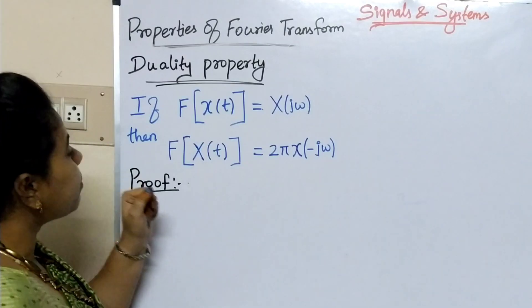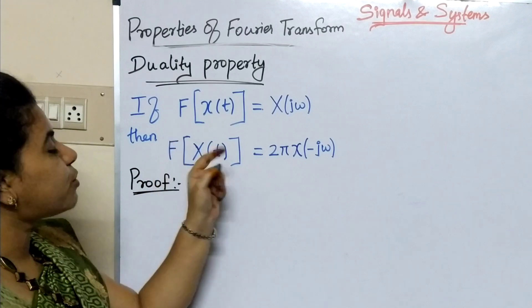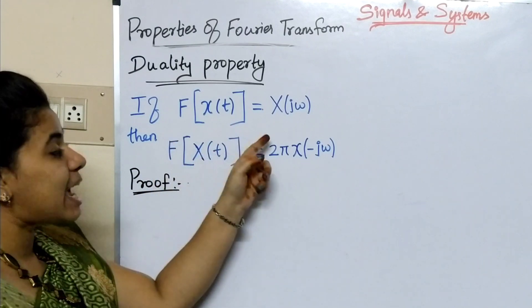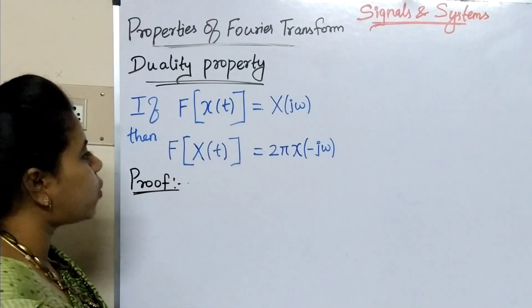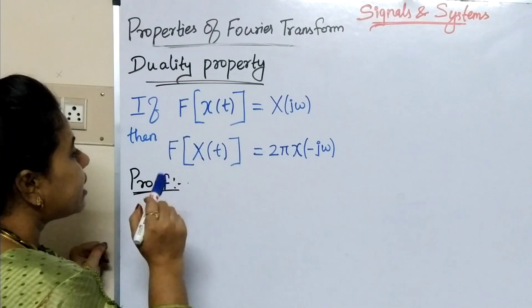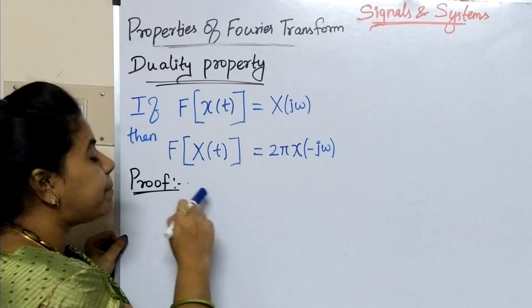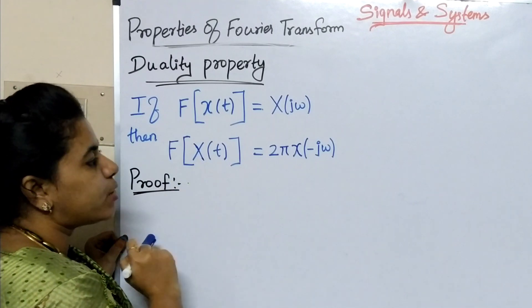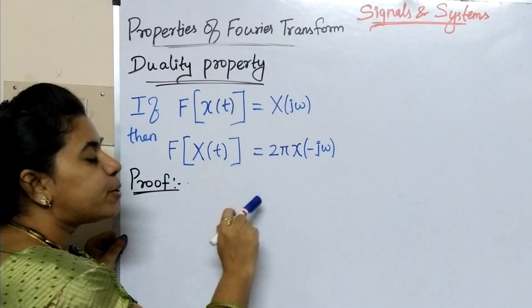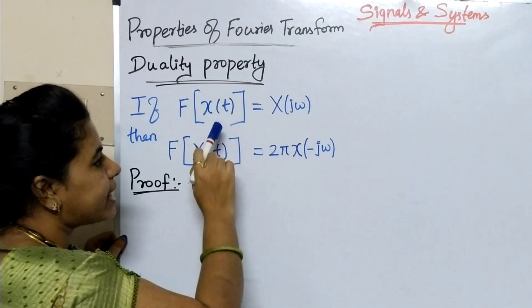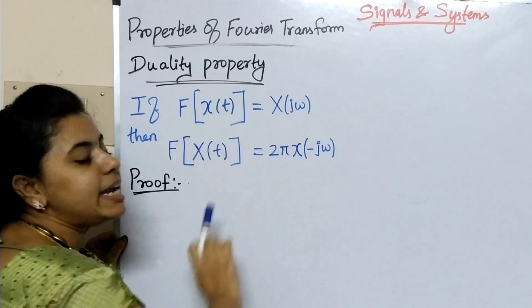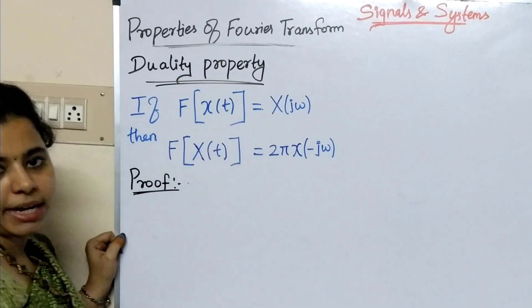If Fourier transform of x of t equals capital X of j omega, then Fourier transform of capital X of t equals 2pi x of minus j omega.